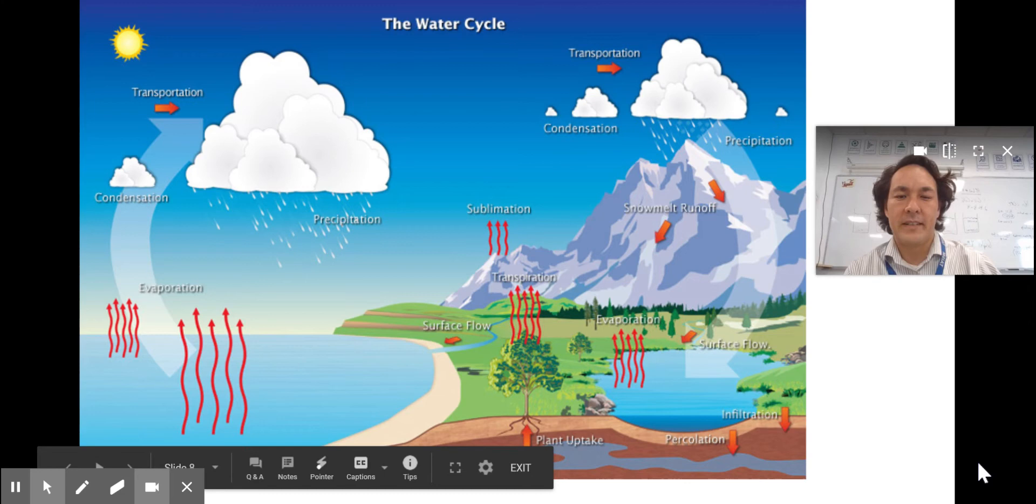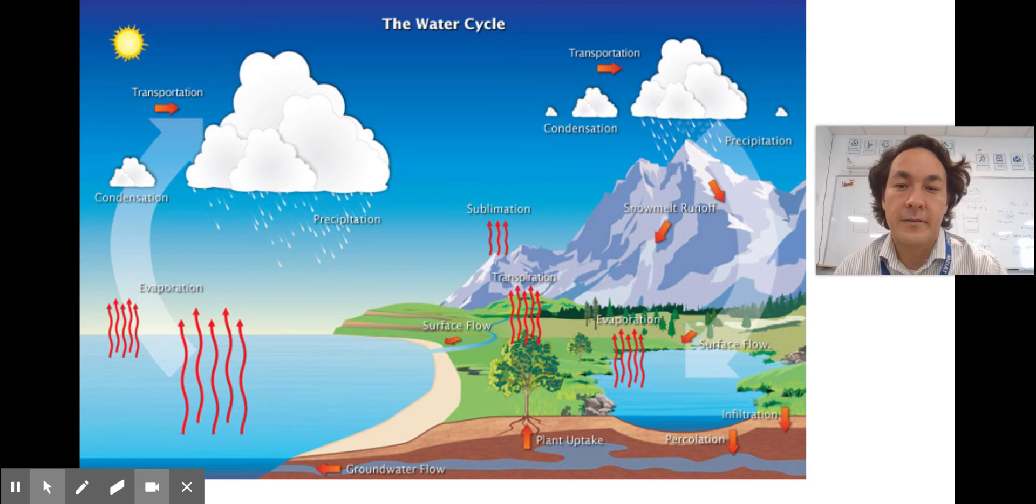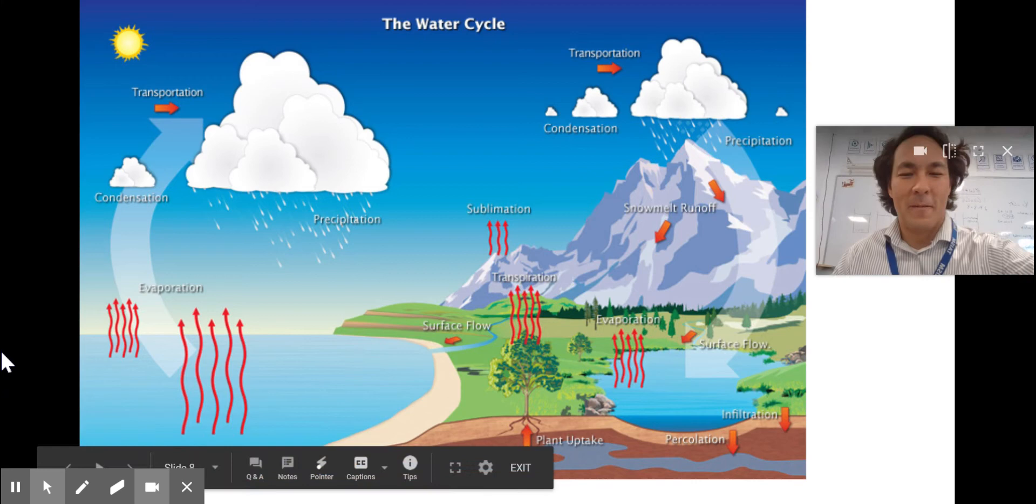This would be a biogeochemical cycle. Bio meaning life, geo meaning the earth, and chemical meaning nutrients, things like water, carbon, nitrogen, and phosphorus that move around. I'm back. I had to get my water kits.